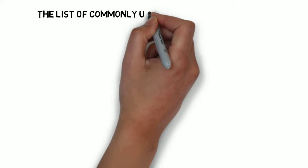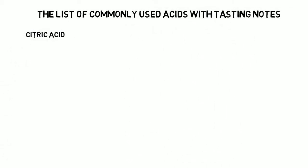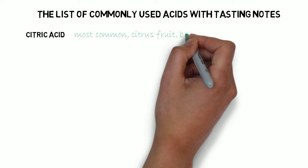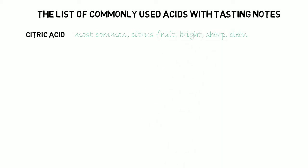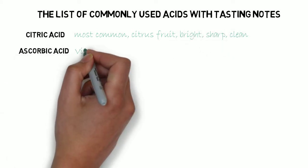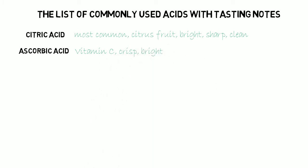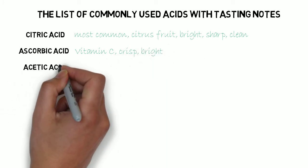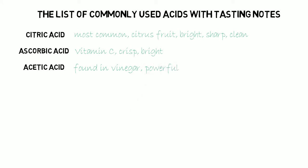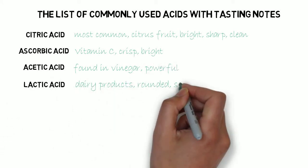The list of commonly used acids with tasting notes: citric acid is the most common in citrus fruits — it's sharp, bright and clean. Followed by ascorbic acid, which is vitamin C, found in citrus fruits with a crisp and bright flavor. Then acetic acid, found in vinegar, very powerful. And lactic acid in dairy products, well-rounded and soft.